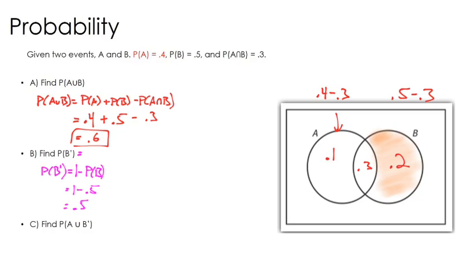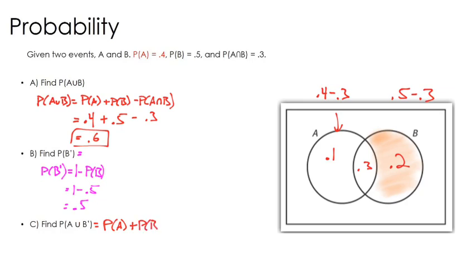Lastly, let's do the probability of A or not B. You might think I'm getting tricky because in this problem, we've combined our addition rule with a complement. Let's work with our addition rule and see what happens. According to this, it would be the probability of A plus the probability of B complement minus the probability of A and B complement.